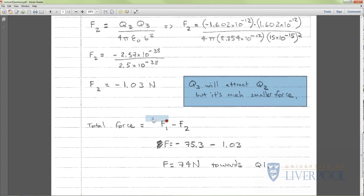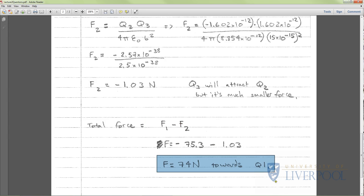Now the final bit: we're going to combine this. I've written total force is equal to F1 minus F2. Use this intuitively because it can get a bit confusing with the minus signs. The force is going to be 75.3 Newtons towards q1 and 1.03 Newtons towards q3. I'm going to subtract that value from this one, and that gives us a resultant force of 74 Newtons towards q1. So hopefully you got those all right. Well done.